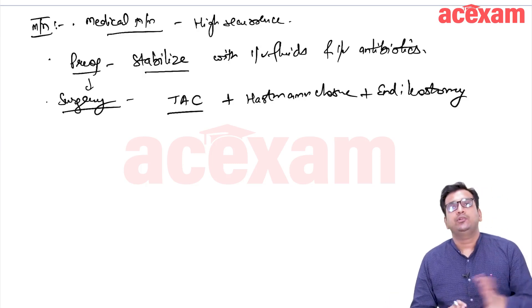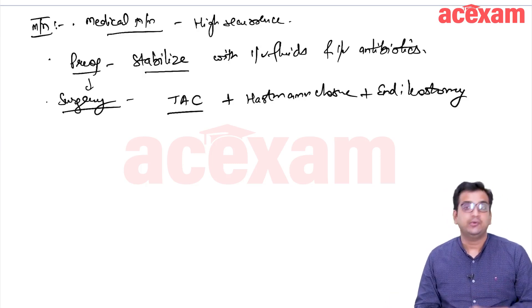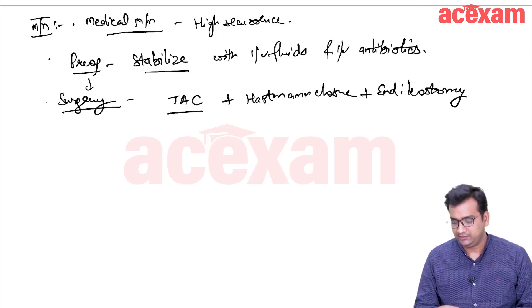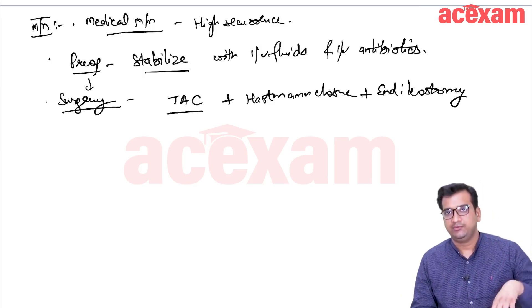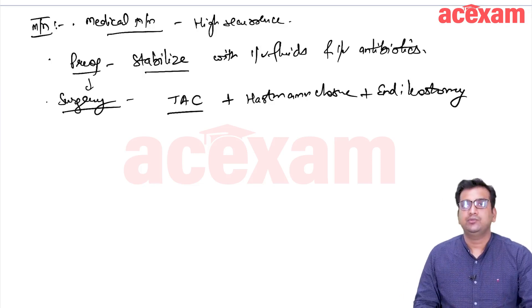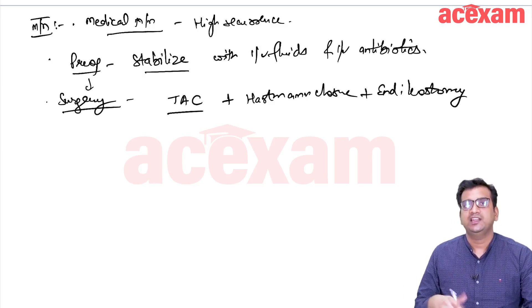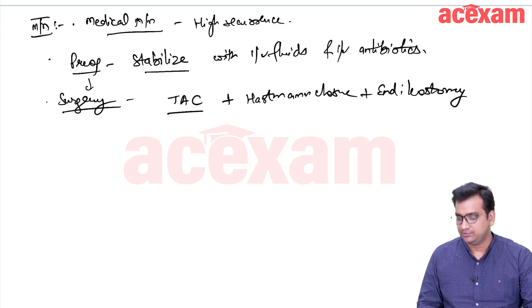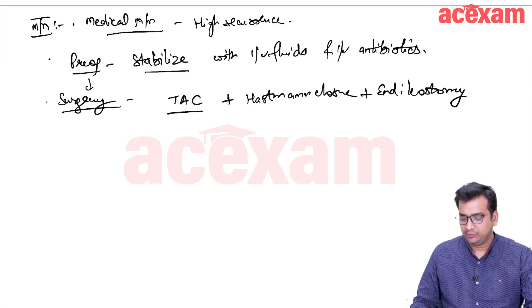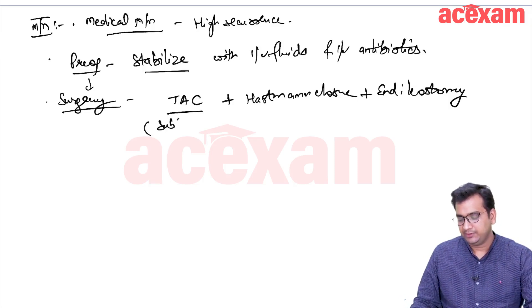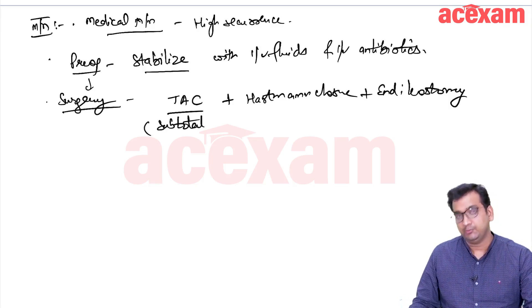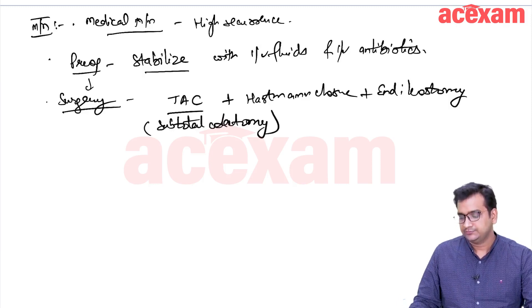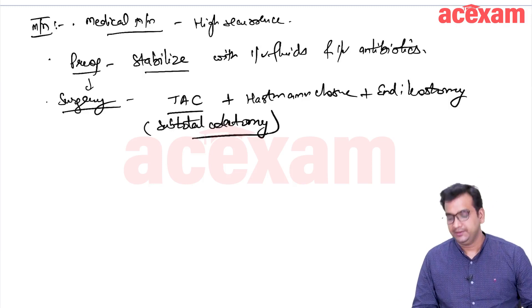A total proctocolectomy with ileal pouch anal anastomosis is generally not performed in toxic megacolon. Or a single stage is not performed. Once the patient improves after total abdominal colectomy, then in the second stage we have to perform this ileal pouch anal anastomosis. This total abdominal colectomy is sometimes also referred to as subtotal colectomy as we are not removing the rectum. So, this is all about toxic megacolon.